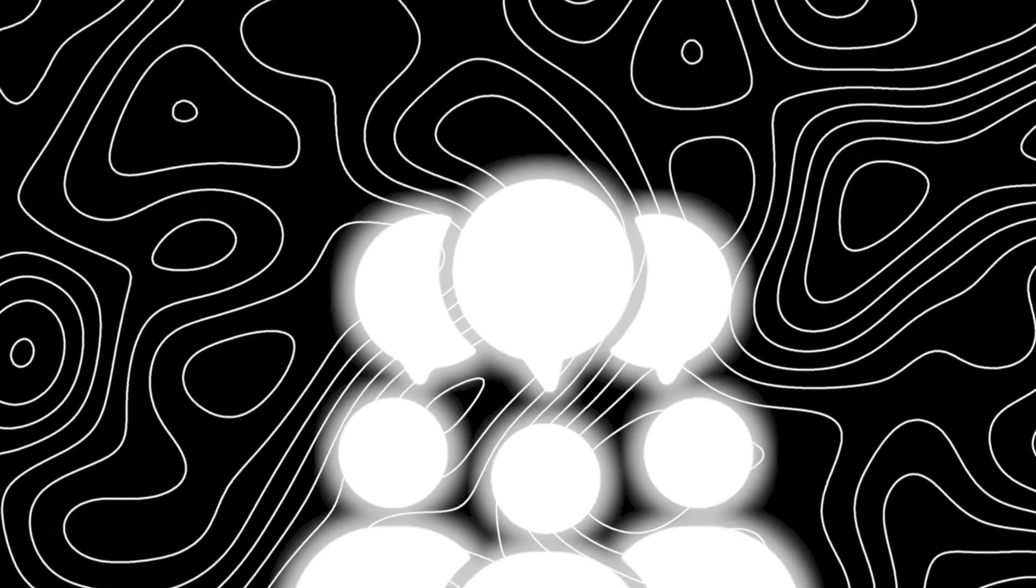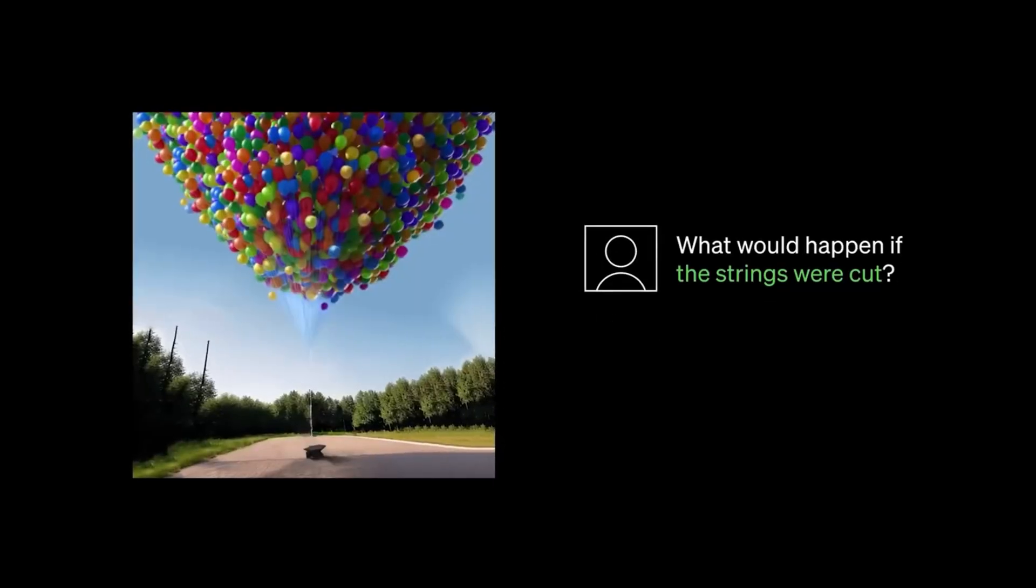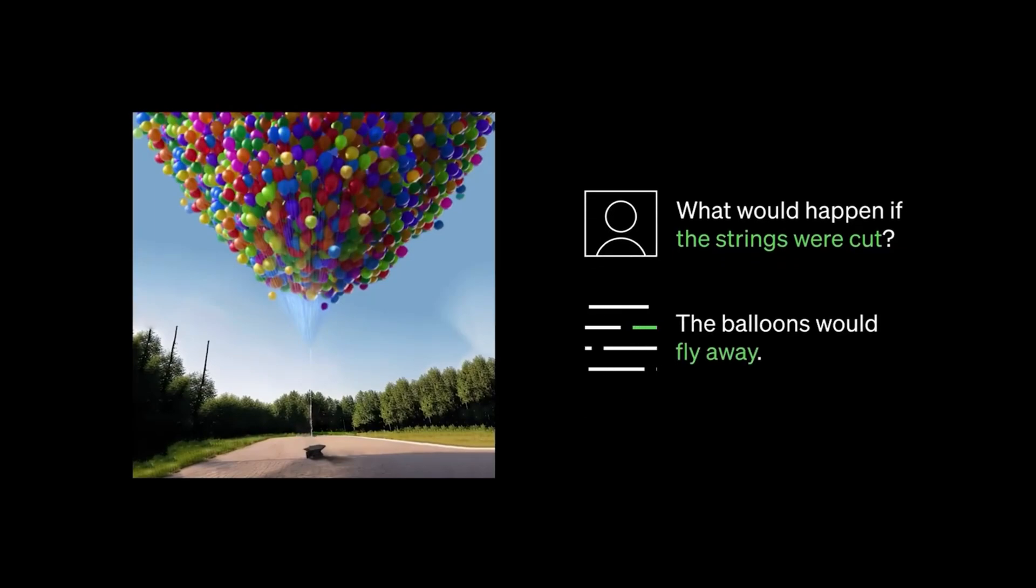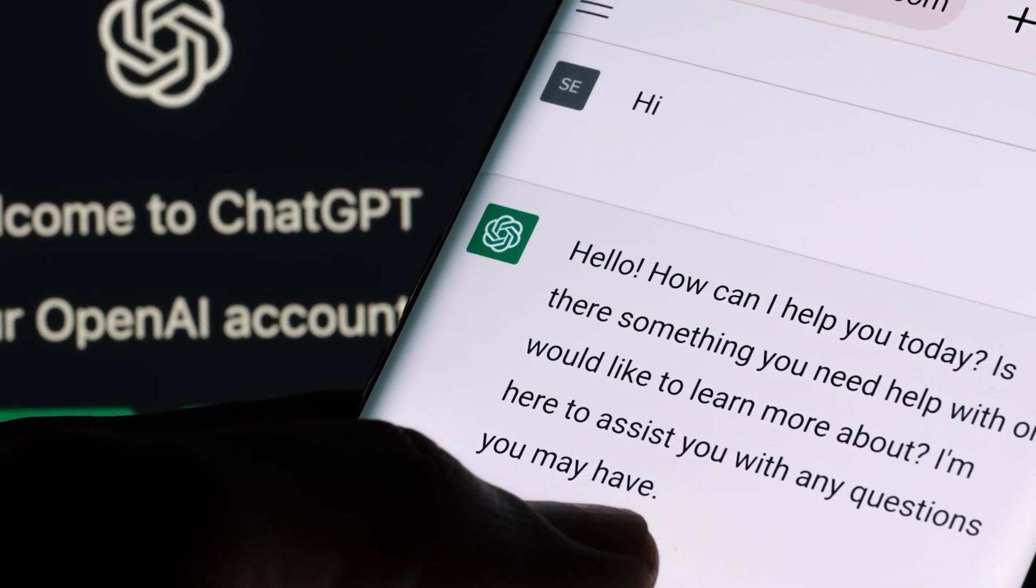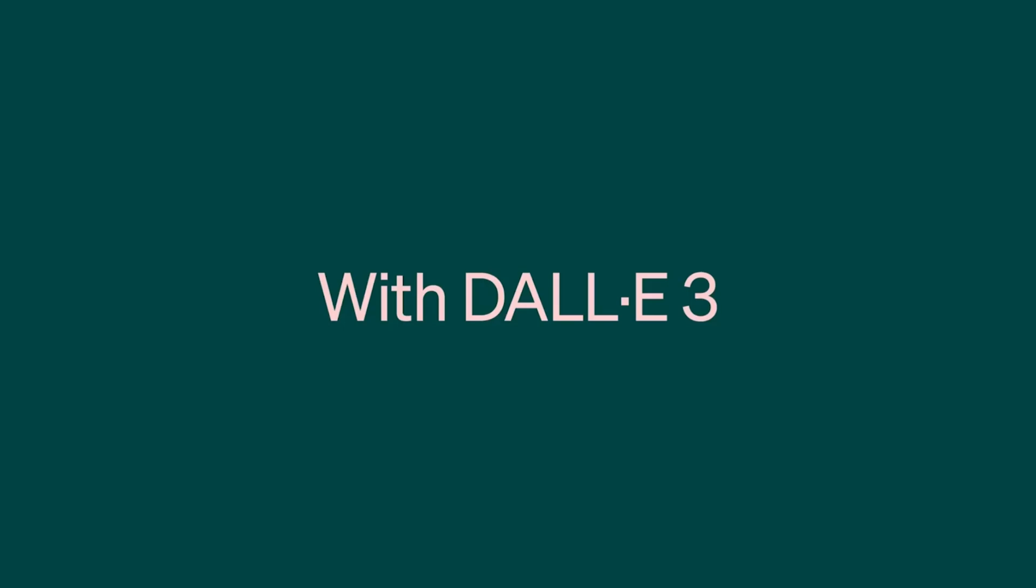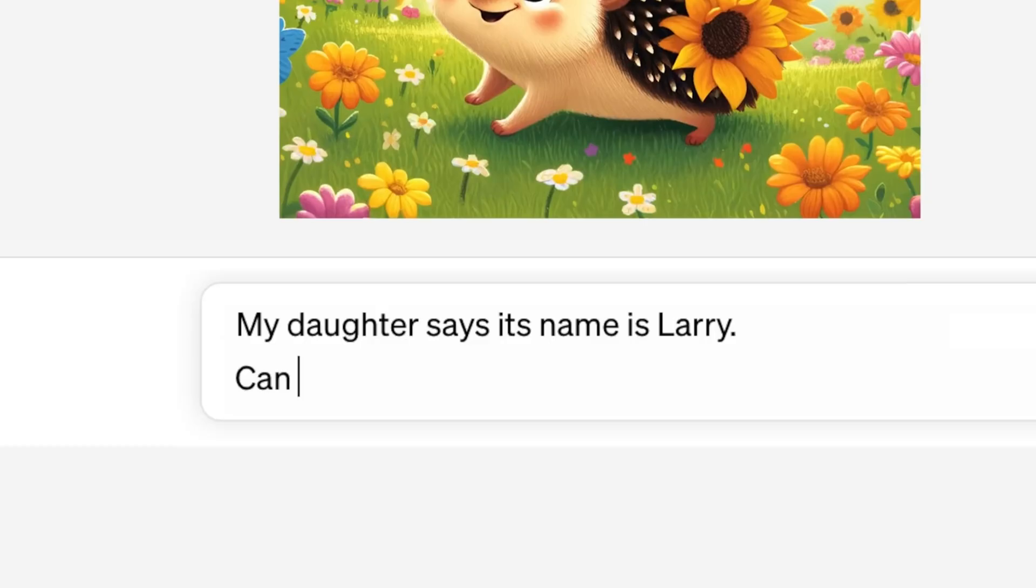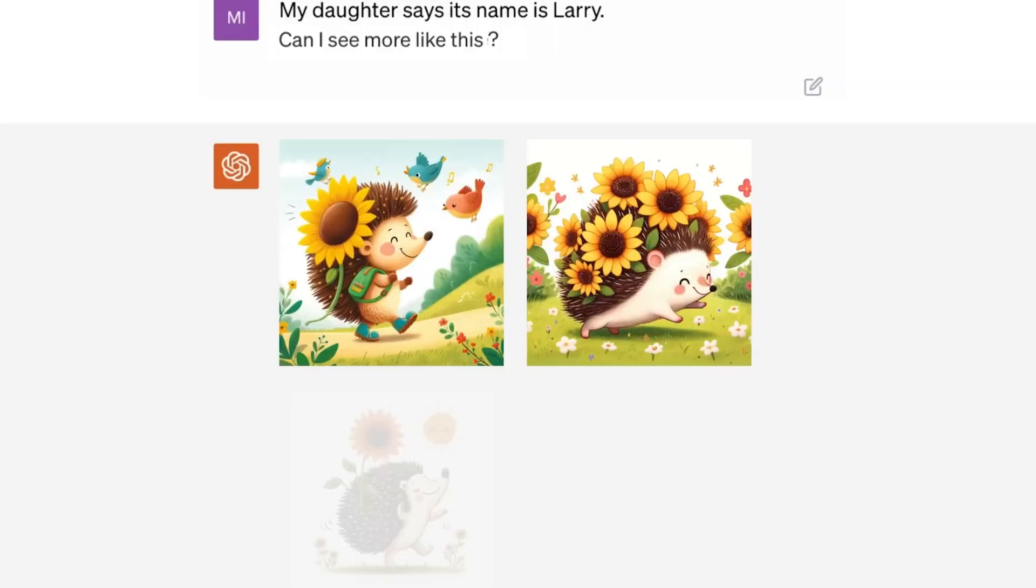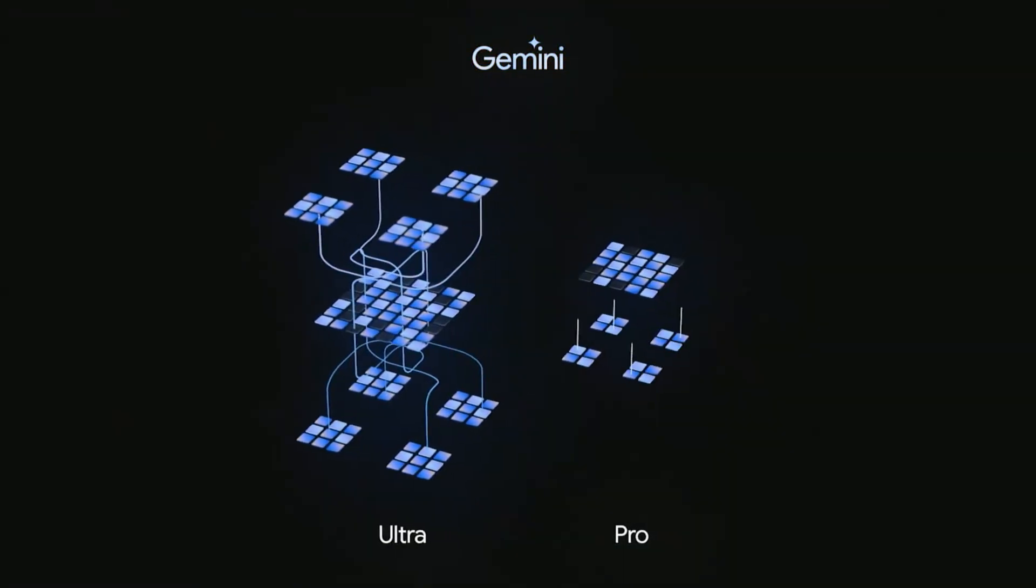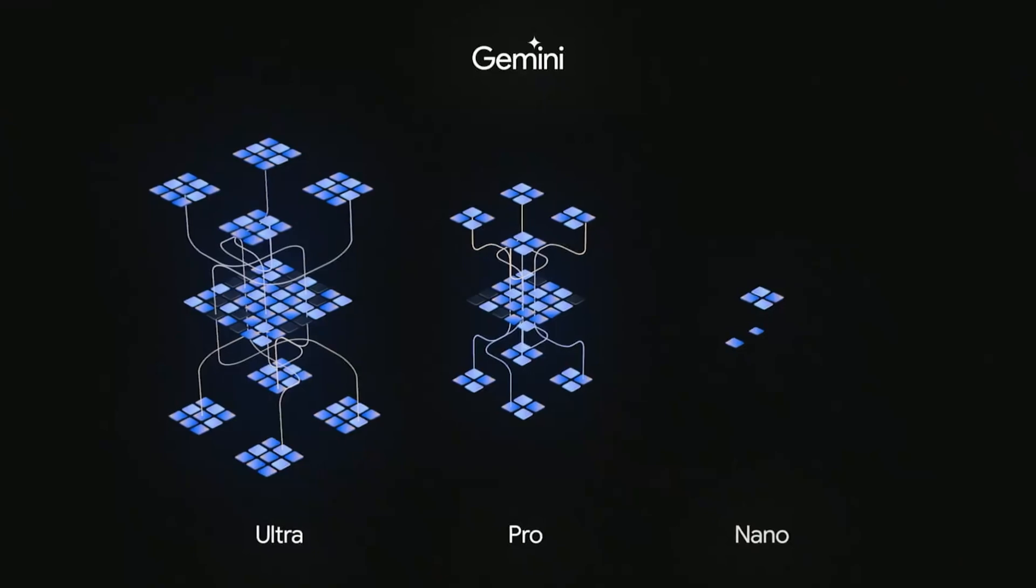Some people might say GPT-4 also supports images and has vision, which is actually true, but it's important to remember that when GPT was first launched, it was text alone. Later, they added DALL-E 3 Vision and many more and combined them into one. The fact that Google Gemini is multimodal from the ground up is what makes it a game changer.